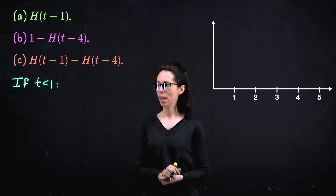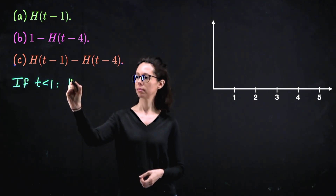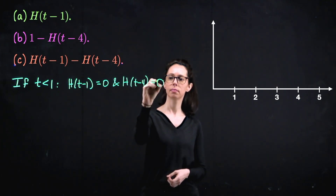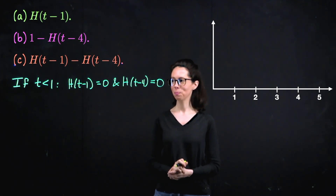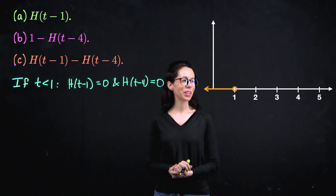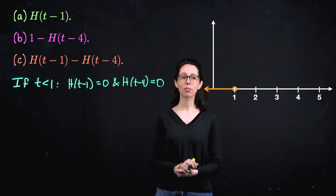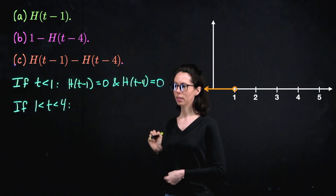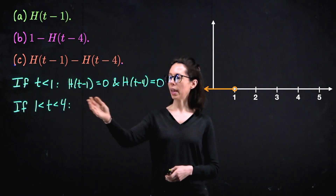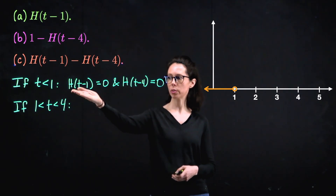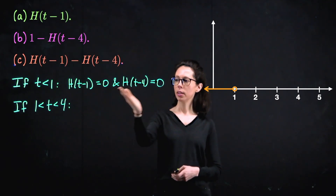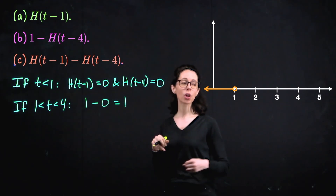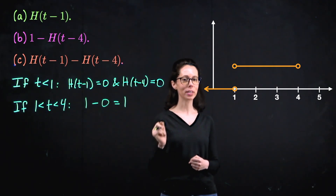What happens if t is less than one? Then both heavyside functions are zero — h of t minus one equals zero and h of t minus four equals zero — so overall it's zero minus zero, which is zero. Between one and four, we have a positive input for the first heavyside function, so h of t minus one equals one, but still a negative input for h of t minus four, so that's zero. The combination gives us one minus zero, which is one.